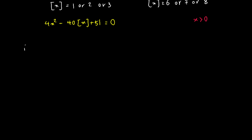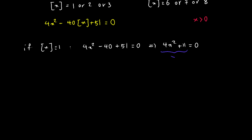Let's say floor of x equals 1. We will have 4x squared minus 40 plus 51 equals 0, giving us 4x squared plus 11 equals 0. The left-hand side is always positive, so this cannot equal zero — there is no solution.